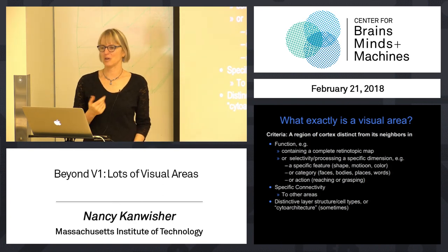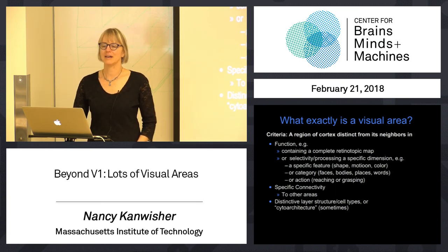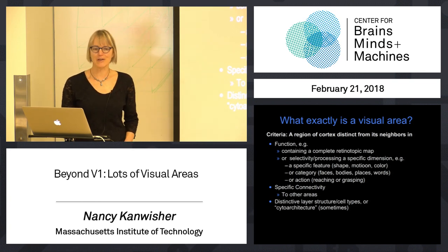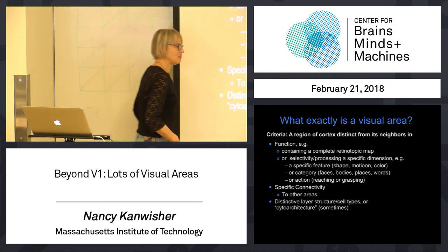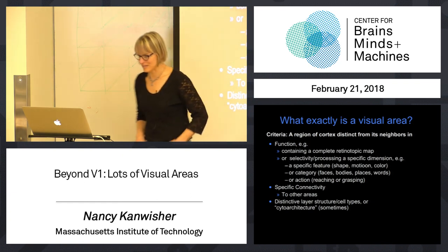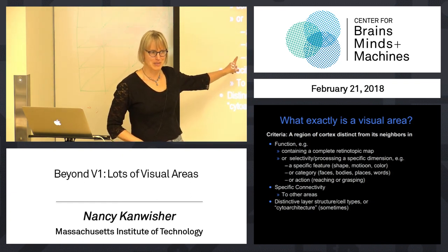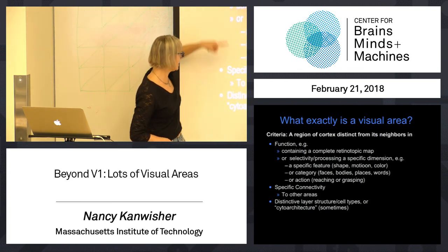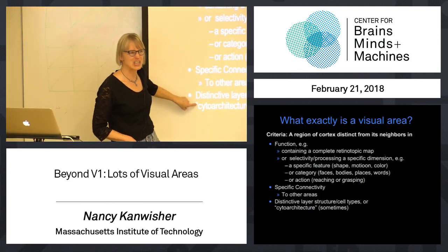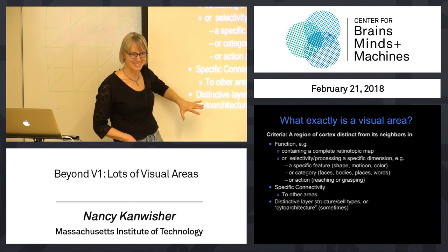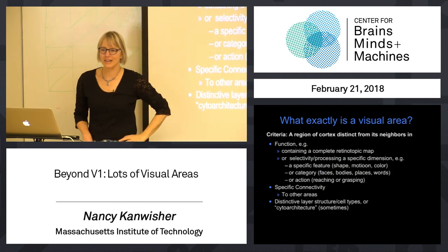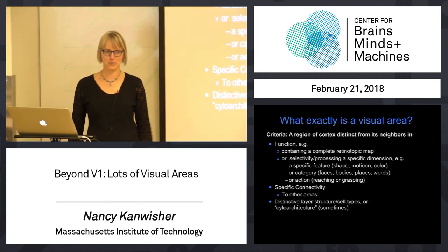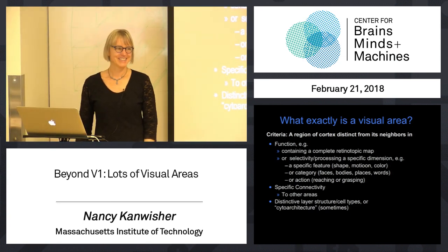So those are the accepted criteria for what you need to call something a distinct cortical area. These criteria are often violated — I named the fusiform face area before I'd read that paper, going only on functional differences without the connectivity or histology evidence, though that's coming along a bit. People use the word 'area' in different ways, but the official, serious neuroscientist way is to follow all these criteria.